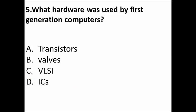What hardware was used by first generation computers? Our options are A: transistors, B: valves, C: VLSI, and D: ICs. And the correct answer is B, valves.